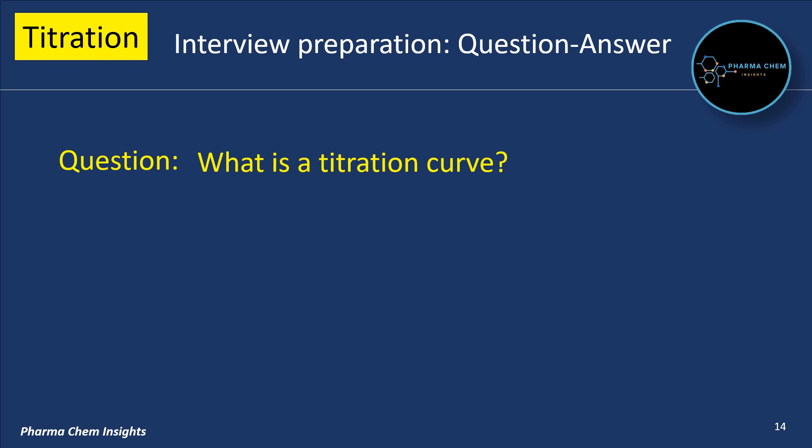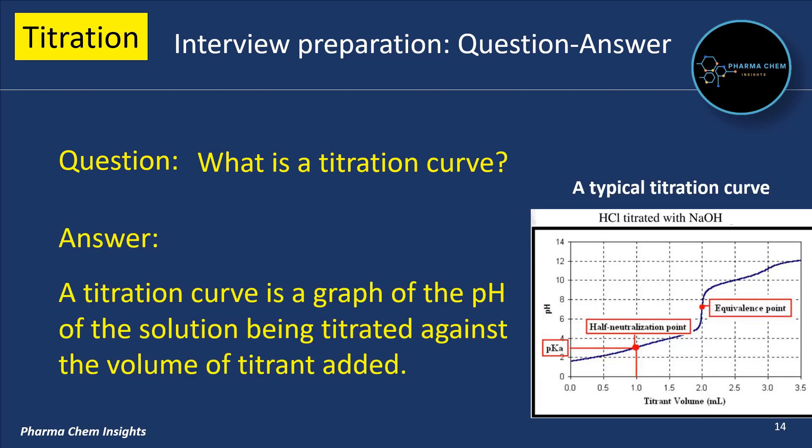Next question: what is a titration curve? A titration curve is a graph of the pH of the solution being titrated against the volume of titrant added. You can see the diagram of a typical titration curve for your reference.